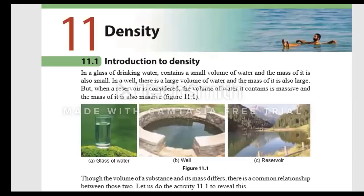Now let's look at figure 11.1. There are three pictures: a glass of water, a picture of a well, and a picture of a reservoir. If you look at the volumes of water in each of these, it is different. The volume of water found in a glass is quite small, whereas the volume of water found in the reservoir is quite large. When there is a large volume of water, the mass of it is also large. Therefore the mass of water in the reservoir is quite larger than the mass of water in the glass. So you will understand that different substances will have different volumes and different masses.